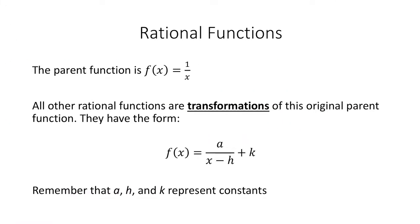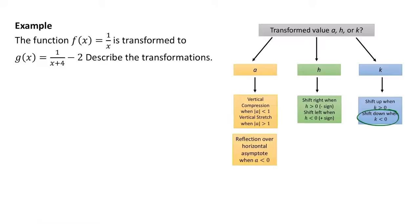So the range will be all real numbers from negative infinity to 0 and from 0 to infinity. Since this is the parent function, all rational functions are considered to be transformations of this original function. The transformed functions all have the form f of x equals a over x minus h plus k, where a, h, and k are constants.